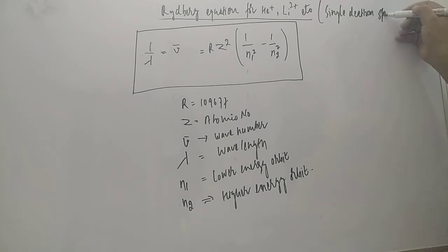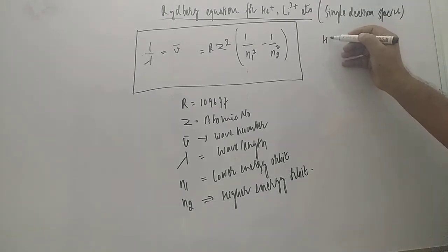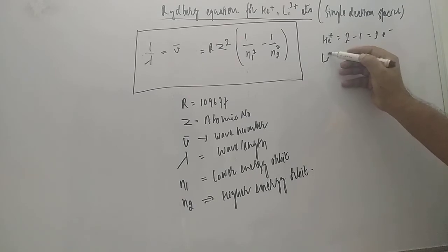Helium plus means what? Two minus one, that is one electron. If you're talking about lithium two plus, that means three minus two, which is again one electron.